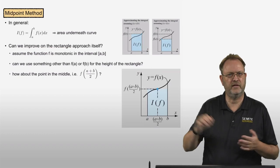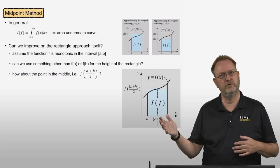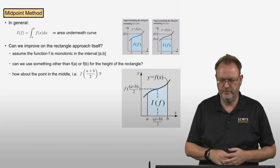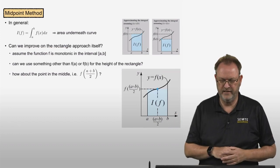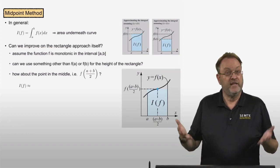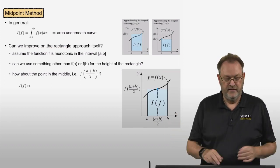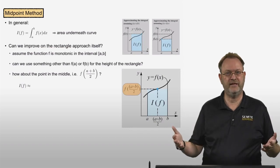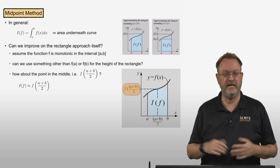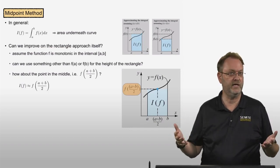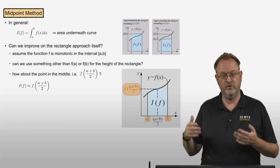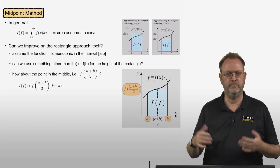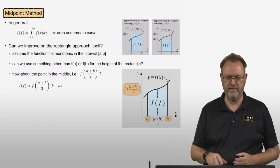If the function is monotonically increasing, one endpoint is underpredicting and one is overpredicting, so the midpoint should be a better approximation to the area underneath the curve. We approximate the integral by the function value at the midpoint, f evaluated at (a+b)/2, times the width of the rectangle, which is still b minus a.